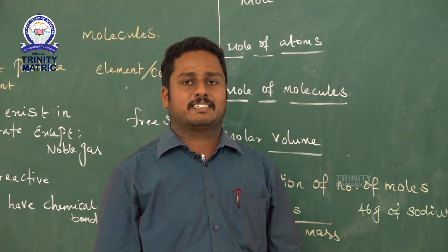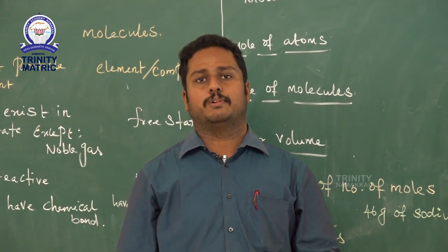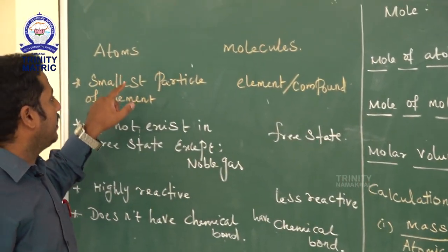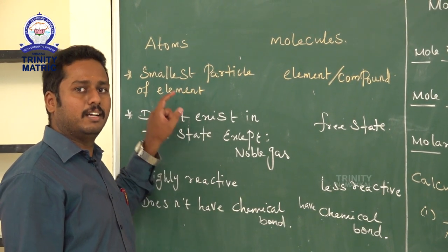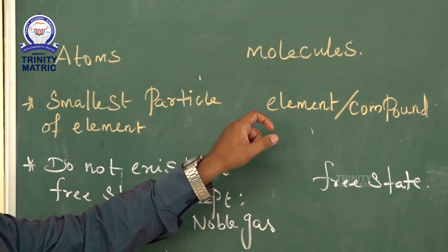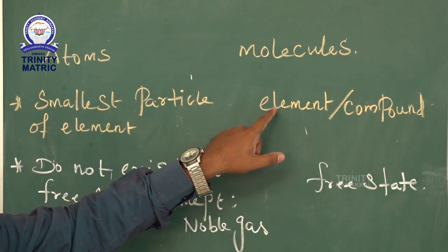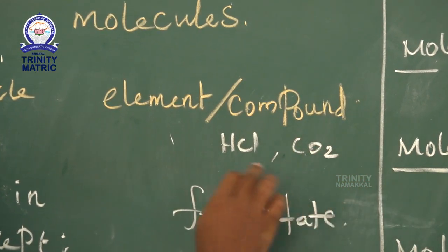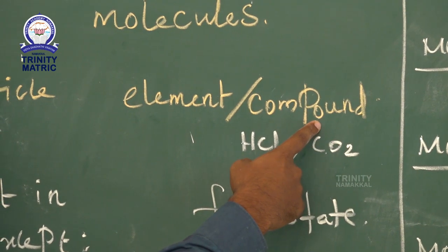Hi students, this is a continuation of the session about atoms and molecules. The difference between atoms and molecules: the first point is that an atom is the smallest particle of an element. A molecule is also the smallest particle of an element — for some cases like noble gases — or of a compound, such as hydrochloric acid or CO2.